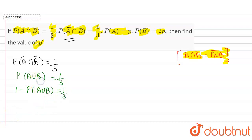This can be written like this because the probability of an event and its complement equals 1. Therefore, probability of A union B is equal to 1 minus 1/3, which equals 2/3.